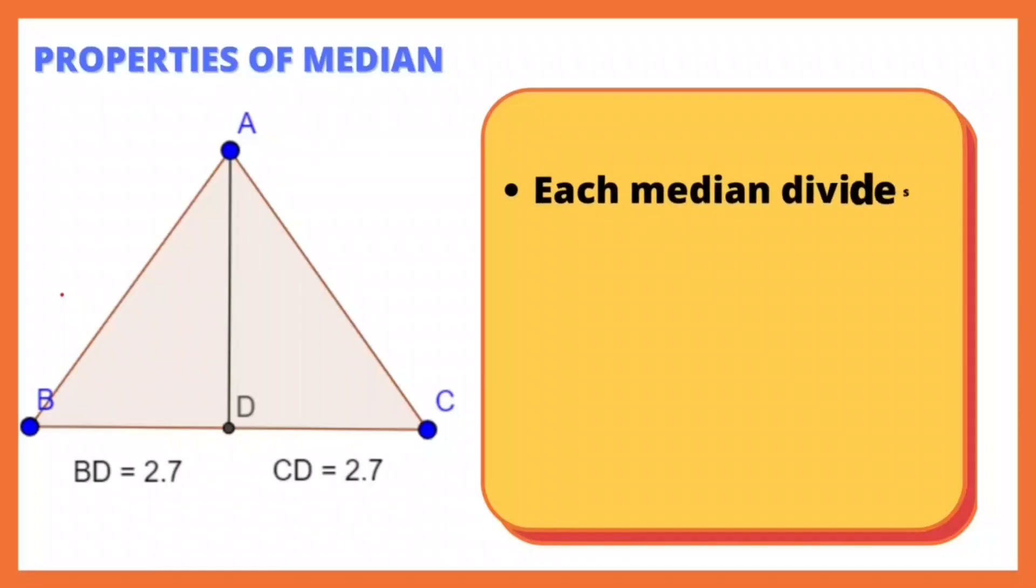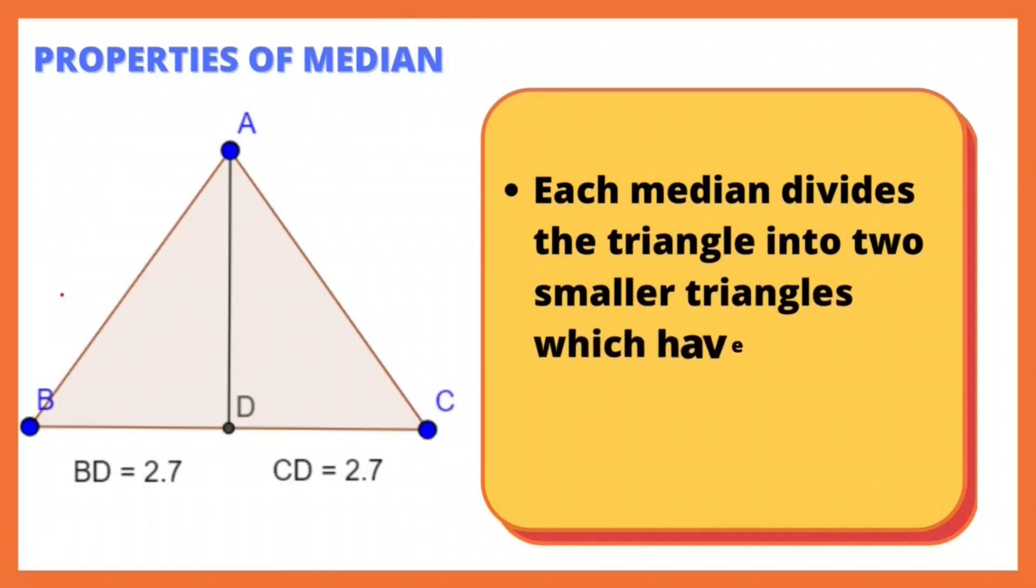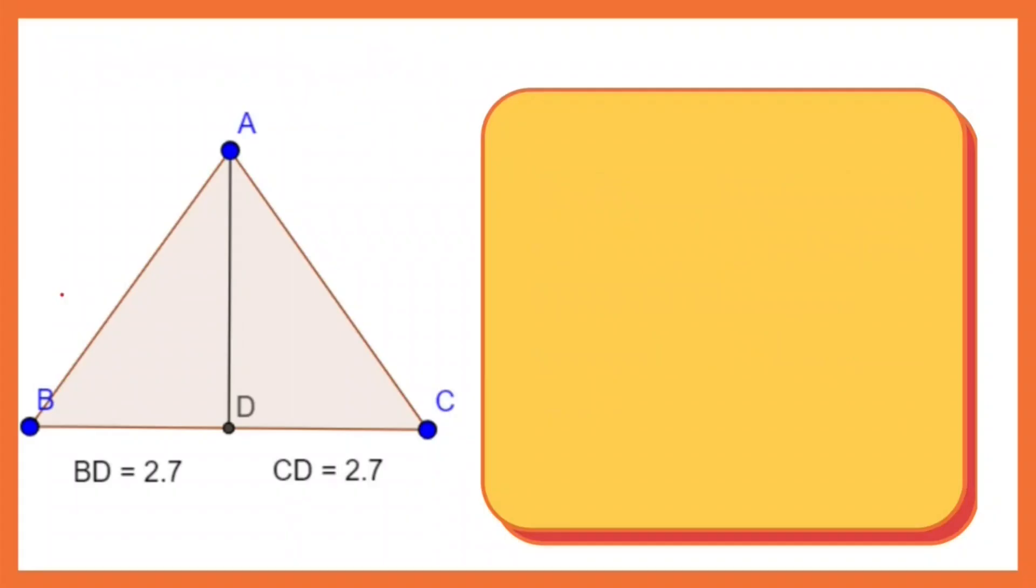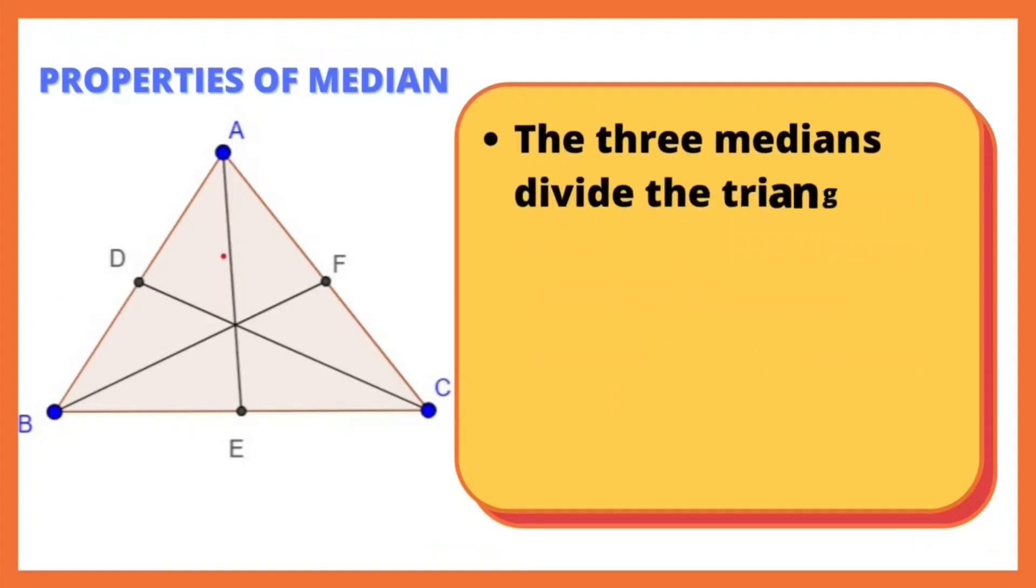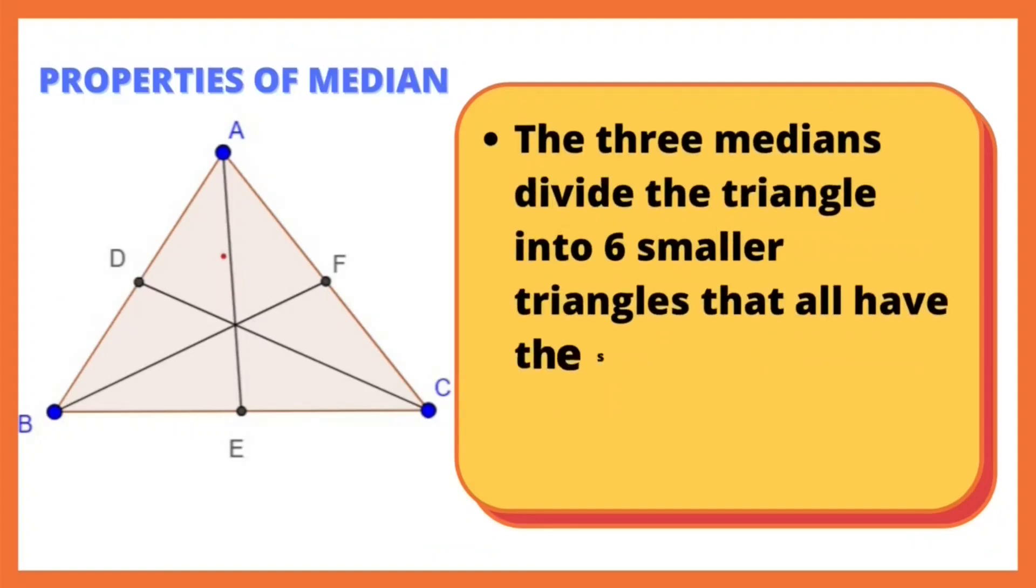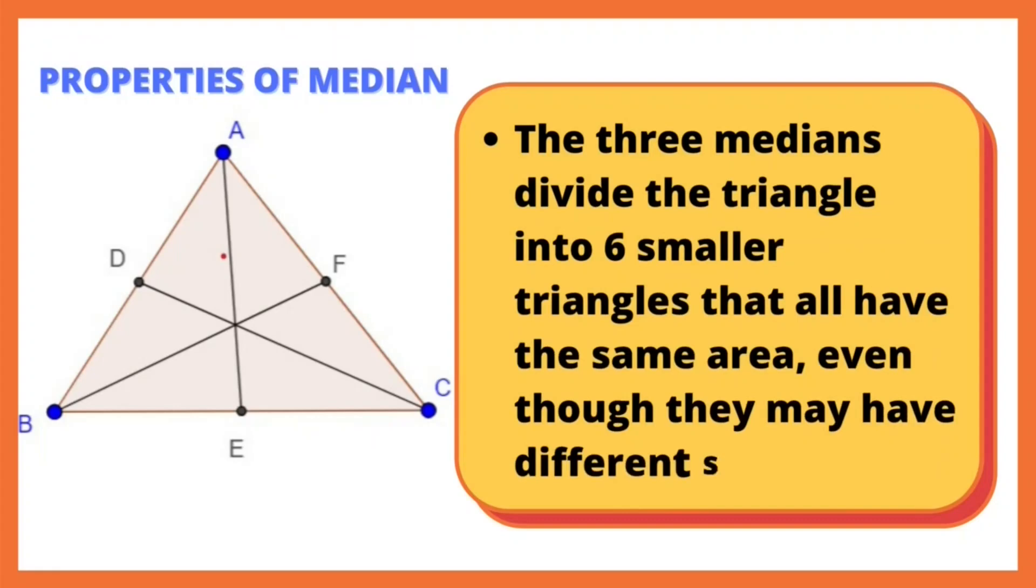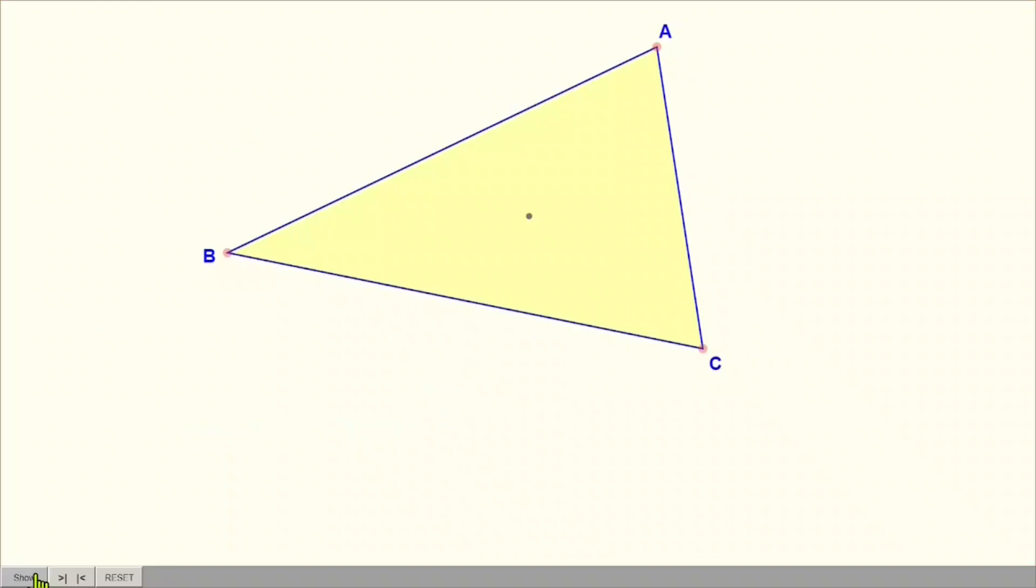The first property is each median divides the triangle into two smaller triangles which have the same area. Similarly, all three medians divide the triangle into six smaller triangles that all have the same area, even though they may have different shapes.